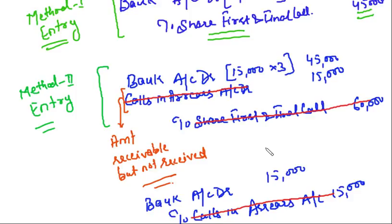It is very important to be able to read the net effect of journal entries. In share capital transactions, the main effect is: Bank increases (debit) and Share Capital increases (credit). Bank is debited with ₹60,000 and Share Capital is credited with ₹60,000. That is the fundamental principle.